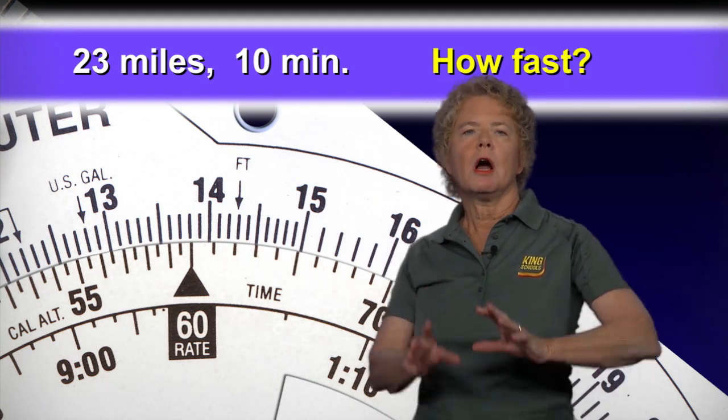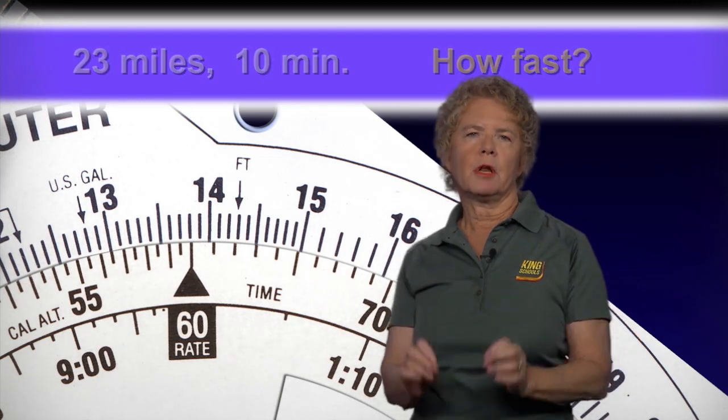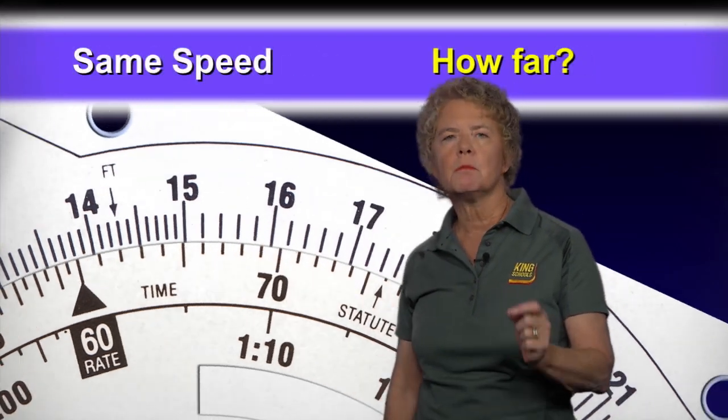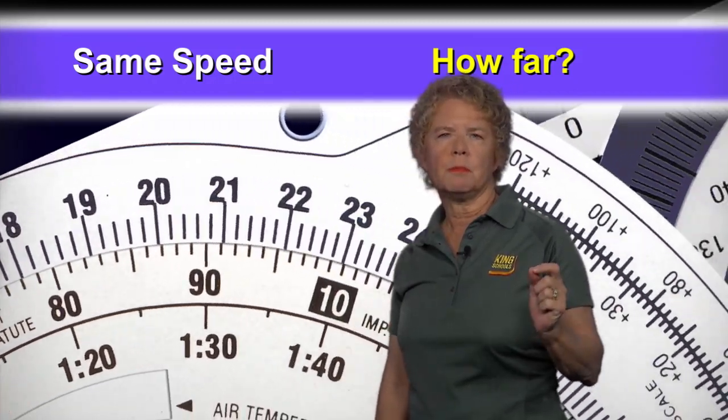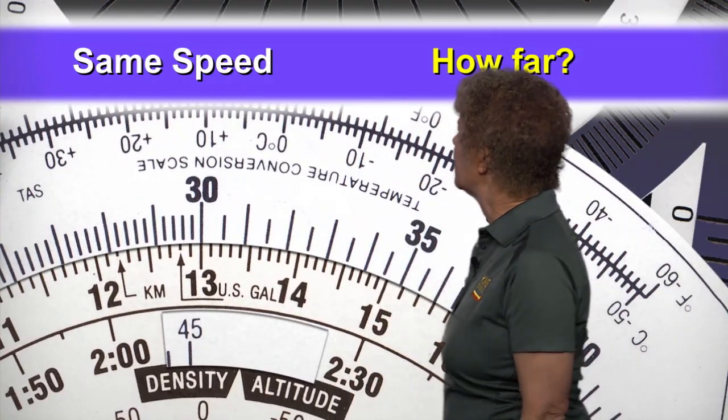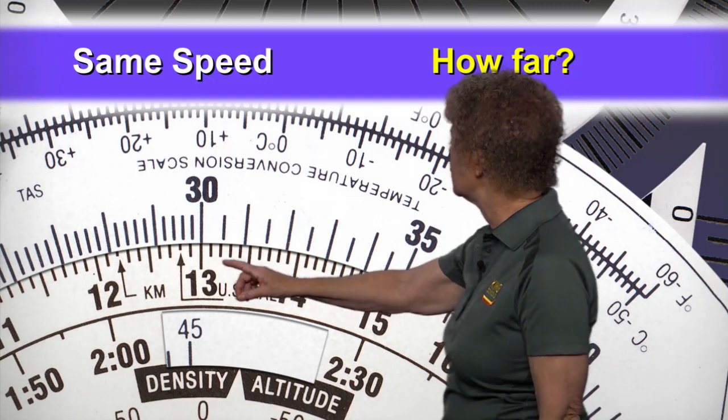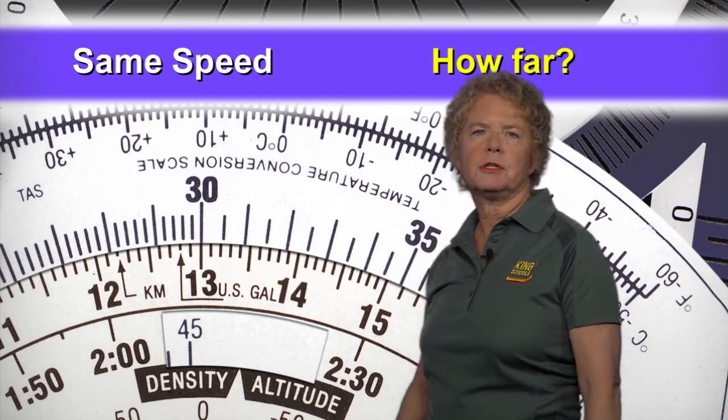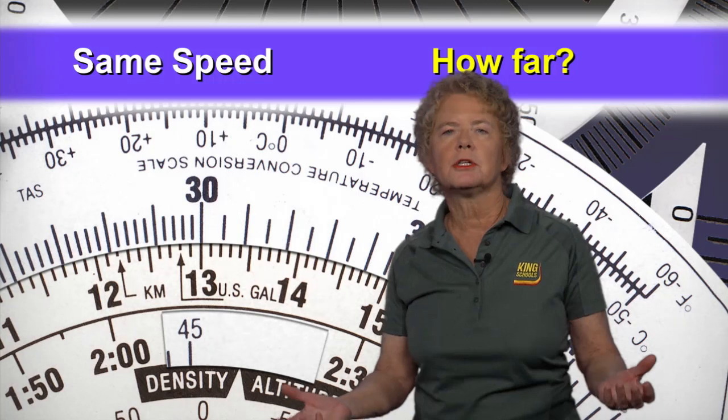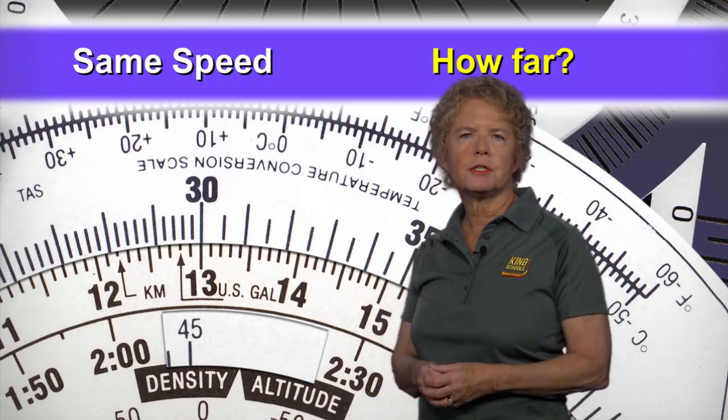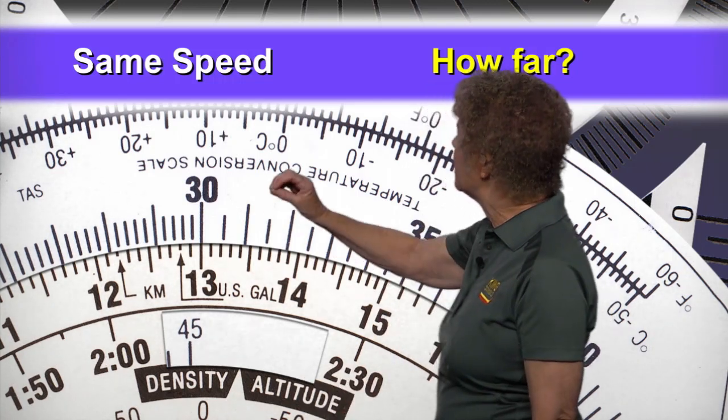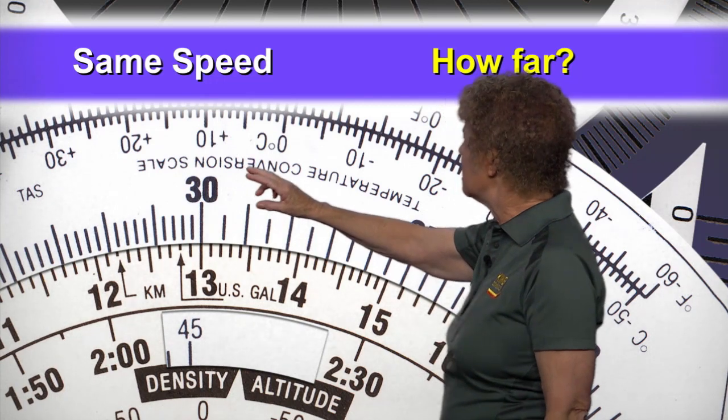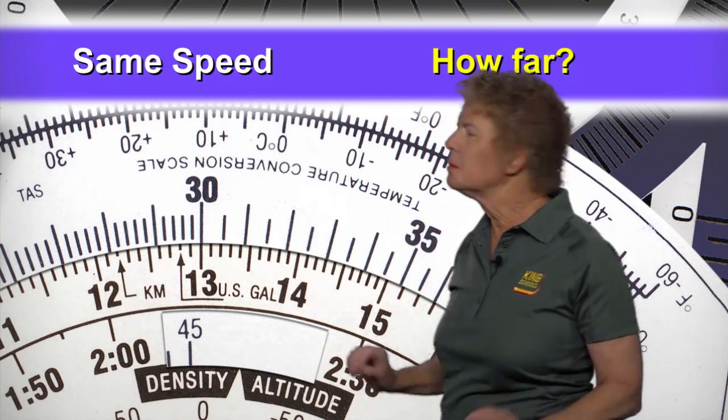So look around on the inside scale of the flight computer, and we're looking for 13. We're looking for the number of minutes that we're going to be flying. So on the inside scale of the flight computer, find the 13, and on the outside scale, because the outside scale is always where you find your distance, it will tell you how much distance you will be able to cover in 13 minutes.